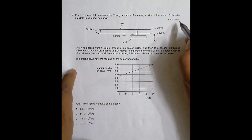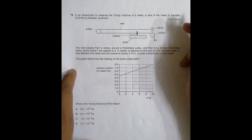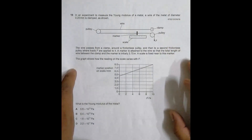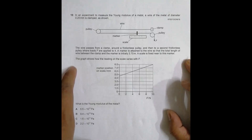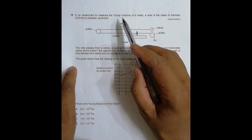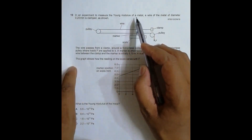Hello folks, here we have a question from the 2018 October/November Paper 13, question number 19. This question is concerned with the chapter on deformation of solids. It says that in an experiment to measure the Young's modulus of a metal, a wire of the metal of diameter 0.35 millimeters is clamped as shown.